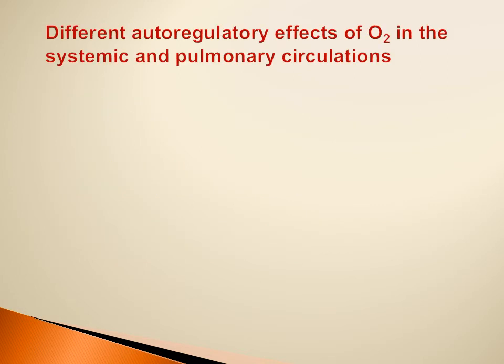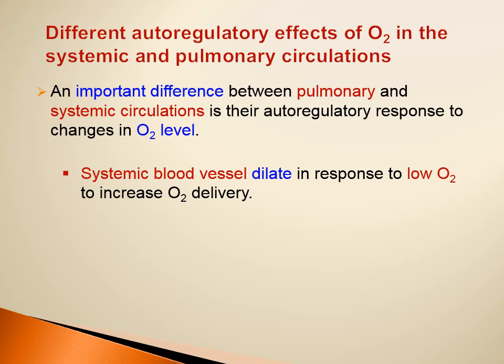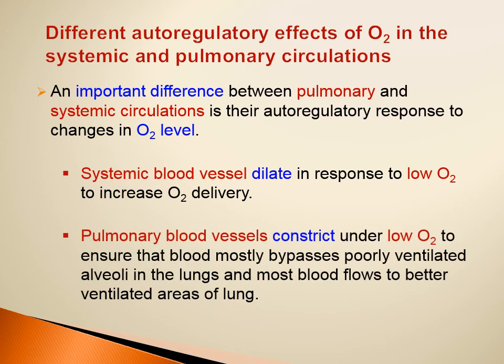An important difference between pulmonary and systemic circulations is their autoregulatory response to changes in oxygen level. Systemic blood vessels dilate in response to low oxygen to increase oxygen delivery to tissues. In contrast, pulmonary blood vessels constrict under low oxygen to ensure that blood bypasses poorly ventilated alveoli and flows to better ventilated areas of the lung, ensuring blood is well oxygenated as it passes through.